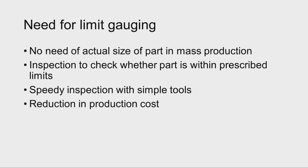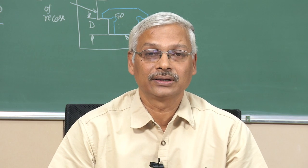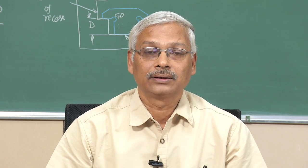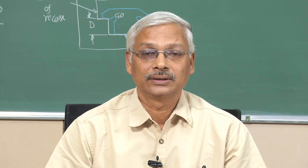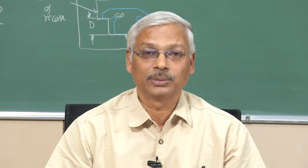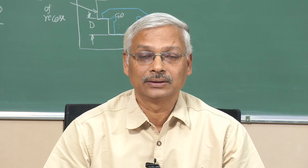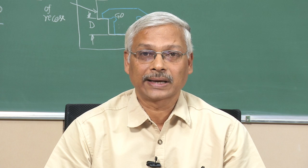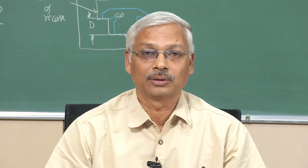Let us understand what is limit gauging. In mass production, components are manufactured in large quantities and many times it is not needed to check the dimension of each and every component. If we can just check whether the work pieces are within the prescribed limits — upper limit and lower limit — that will be enough, and there will not be any need to check the actual size using measuring instruments.